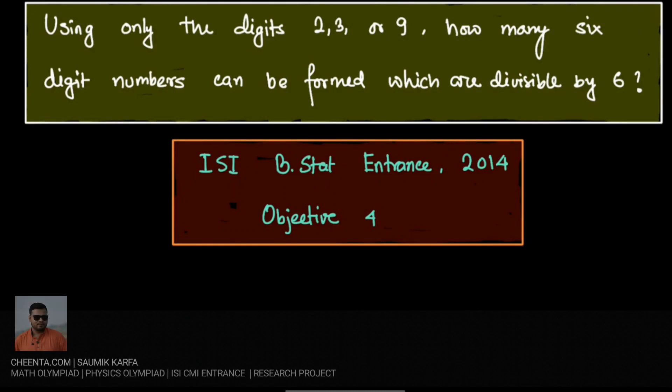This is problem number 4, objective problem number 4 from ISI B-STAT entrance 2014. The problem says we need to form six digit integers or six digit numbers only using the digits 2, 3, or 9, but they need to be divisible by 6 as well.